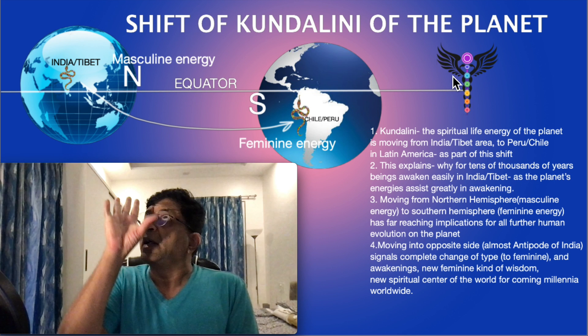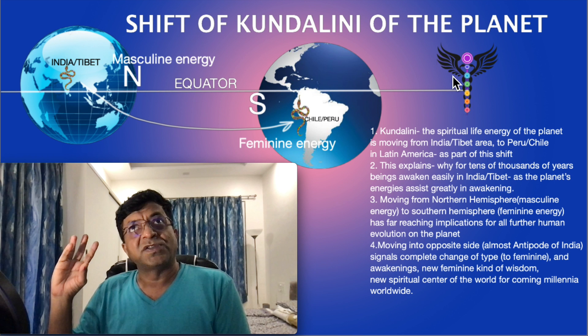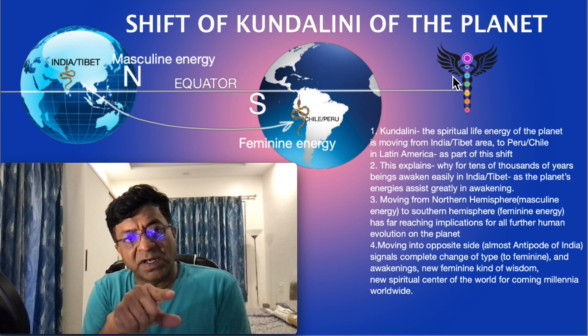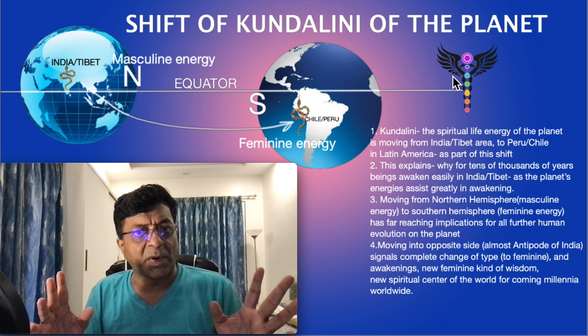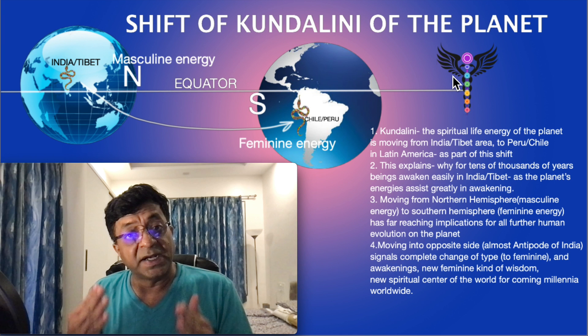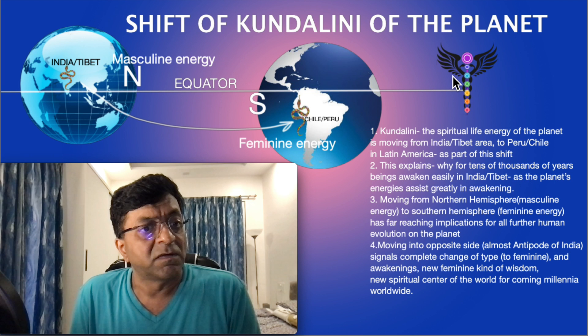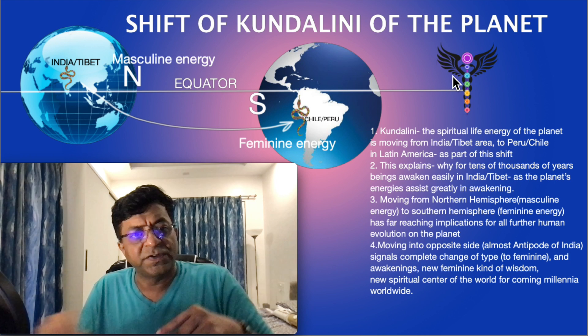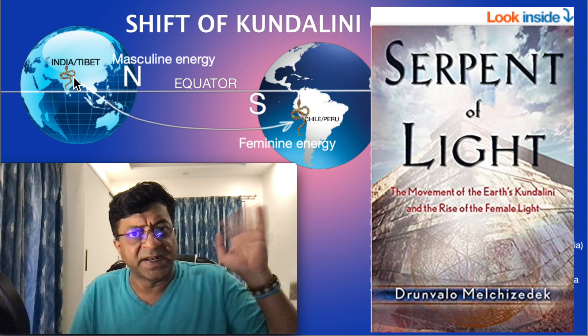Let's get back to the Kundalini of the planet. This Kundalini of the planet — the head of the dragon or the snake (Chinese call it dragon, Indians call it snake) — was residing near Mount Kailash, which is in the India–Tibet region, now China, wherever the border, in the Himalayan range. That's where the Kundalini of the planet was — like forever. It has been there in India and Tibet for millenniums. And now, as part of this shift, and there are resources I will share with you who talk about this, it is shifting. It is still shifting.